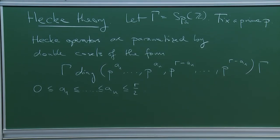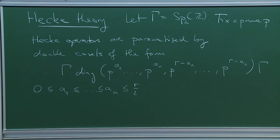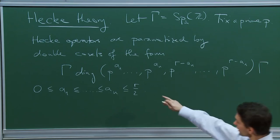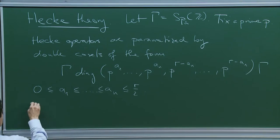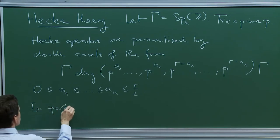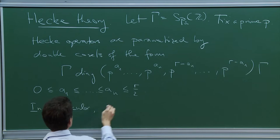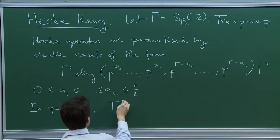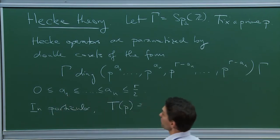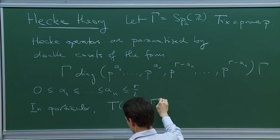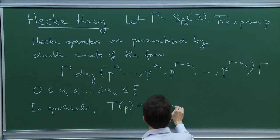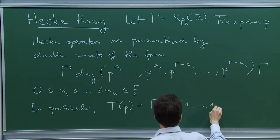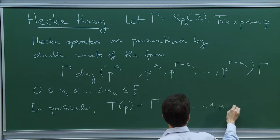In particular, if r is 1, then there is only one such Hecke operator. That's simply T(P). By slight abuse of notation, I just write the double coset — that's the diagonal matrix with N ones followed by N copies of P.